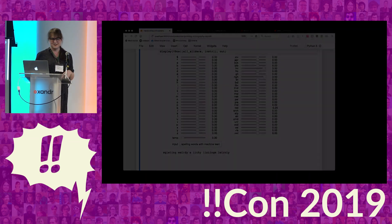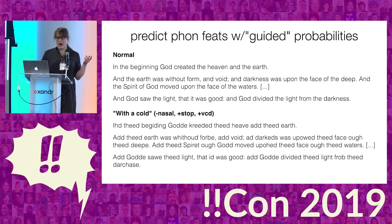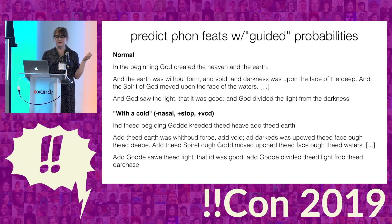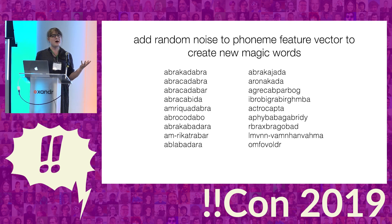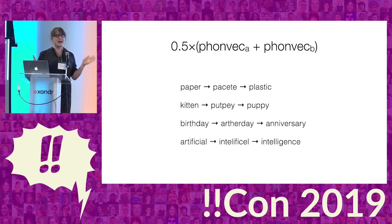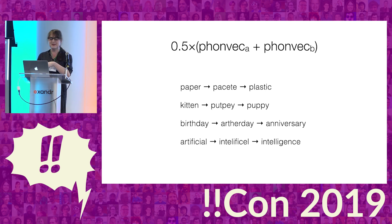I have a few other things to show. Using this system, you can rewrite an entire text to make it sound like you have a head cold. This is the King James Version of the Bible: 'In the beginning, God created the earth, and the earth was without forb and void.' You can generate new magic words by inferring the phoneme vector, adding random noise to it, and then spelling them out — so this is 'abracadabra' plus normally distributed noise. You can find the average and generate a new word halfway between other words: halfway between 'paper' and 'plastic' is 'Pesidi.' Halfway between 'kitten' and 'puppy' is 'puppy'; halfway between 'birthday' and 'anniversary' is 'Arthur Day'; halfway between 'artificial' and 'intelligence' is 'Intellithisial Intelligence.'